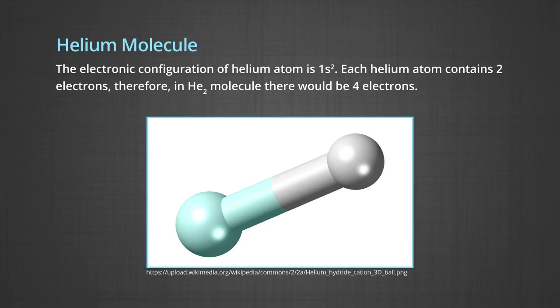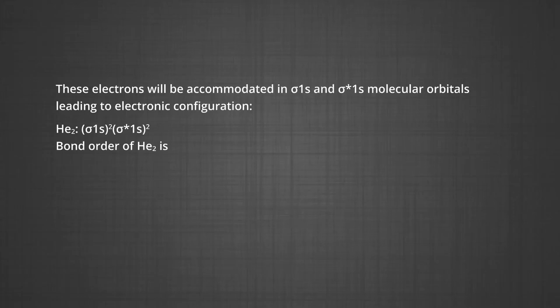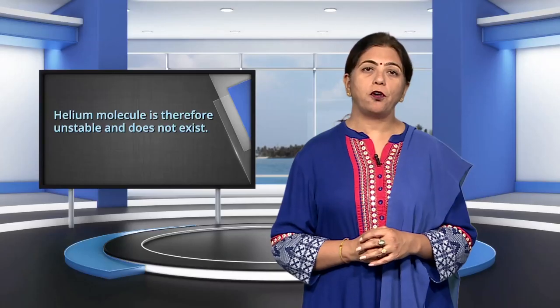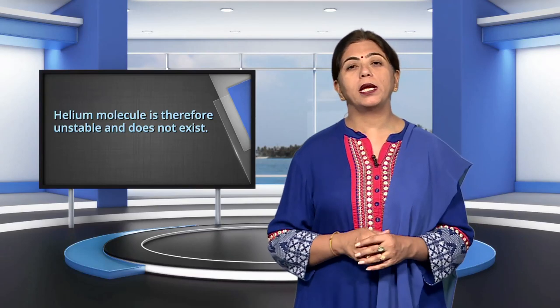The electronic configuration of helium is 1s². Each helium atom contains 2 electrons. Therefore, in He₂ there would be 4 electrons, accommodated in σ1s and σ*1s molecular orbitals, leading to configuration σ1s², σ*1s². The bond order of helium molecule is ½(2 − 2) = 0. Therefore, helium molecule is unstable and does not exist — this is a frequently asked question.